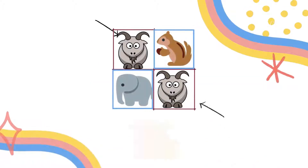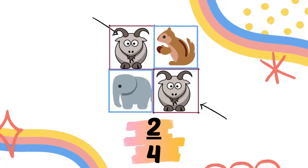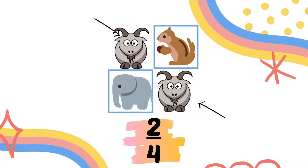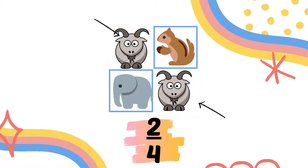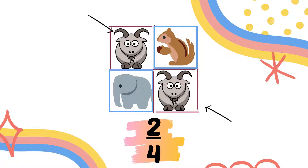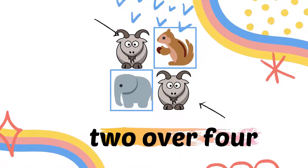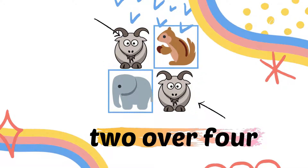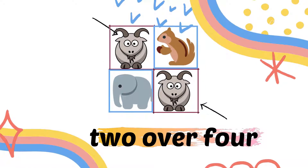So the fraction for the goat will be 2 over 4. We write number 2 on top as the fraction of a goat — we have 2 goats. We write 2 over 4 because we have 4 equal parts. So the fraction will be 2 over 4, which is written like this: 2 over 4.